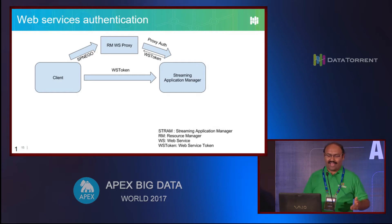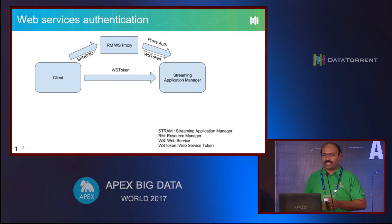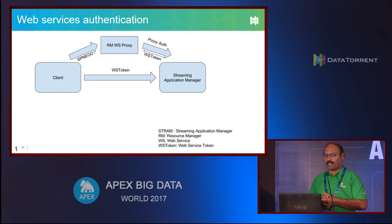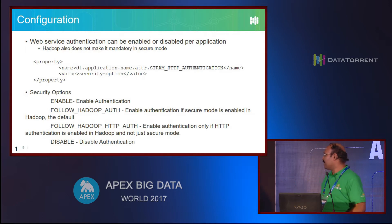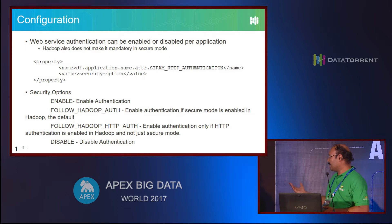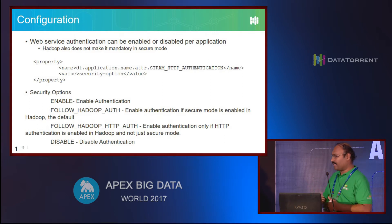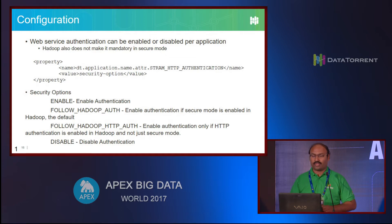Doing Kerberos for web services or web pages is really painful. As a user, you need to log in to Kerberos separately from your terminal, then configure your browser to use those Kerberos credentials - it's not a straightforward process. So not many people actually enable authentication on the web services. We want to give people flexibility on whether to enable or disable web authentication on the app master web service. We have a property for that: if you say 'enable' then it's enabled; if you say 'follow Hadoop authentication', then if Kerberos is enabled on Hadoop we enable authentication on web services; if you say 'follow Hadoop HTTP auth', it mirrors the security settings on Hadoop web services; and 'disable' essentially disables that authentication.